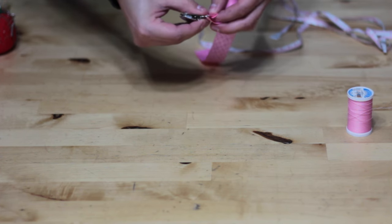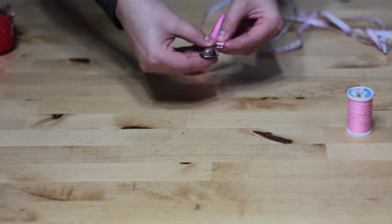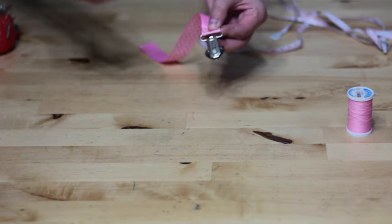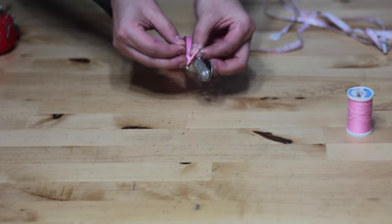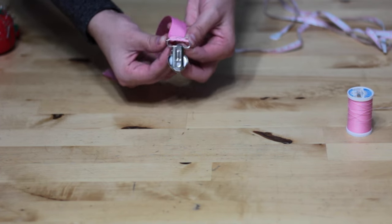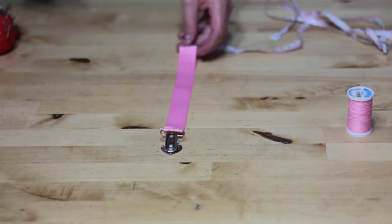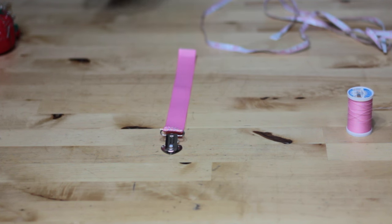And what we're going to do is we're going to take that to the machine and we're going to stitch along the top of the ribbon there where the fold is as close to it as possible so that we encase that end of the ribbon under the fold there. I hope that makes sense.